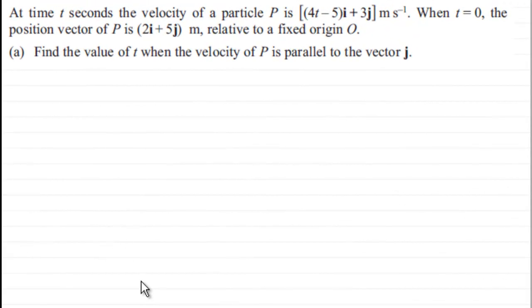Hi. Now we're told that at time t seconds, the velocity of a particle P is given by 4t minus 5 in the i direction plus 3j, and it's given in metres per second.